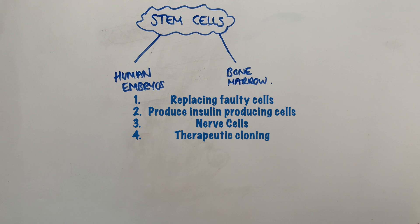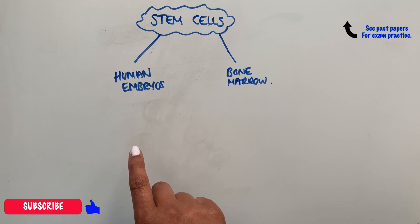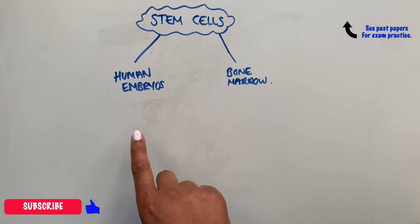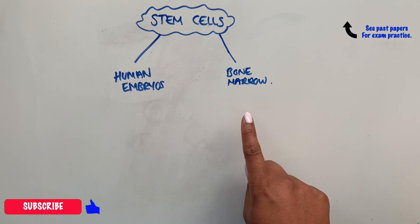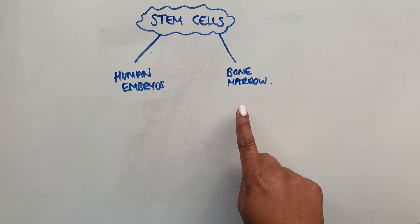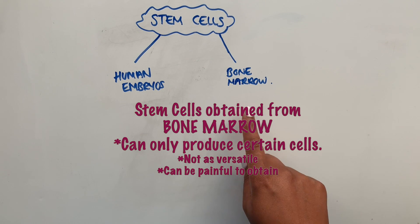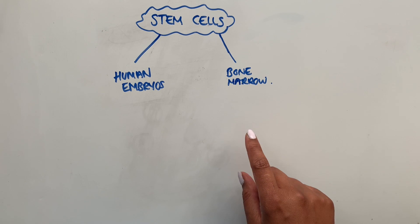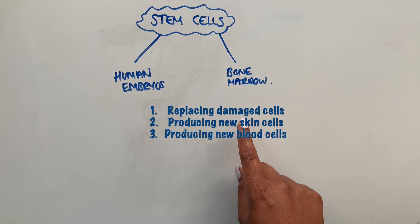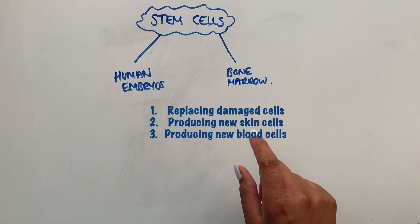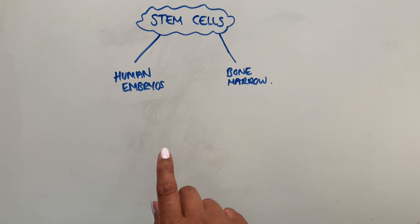We can also use embryonic stem cells in therapeutic cloning, where we use stem cells to treat patients and reduce the risk of the cells being rejected. When it comes to bone marrow stem cells, it is much more painful to extract them because a needle has to be inserted into the middle of the bone. Bone marrow stem cells are not as versatile, but they can be used in bone marrow transplants for diseases like sickle cell anaemia, and to produce new skin or body cells.